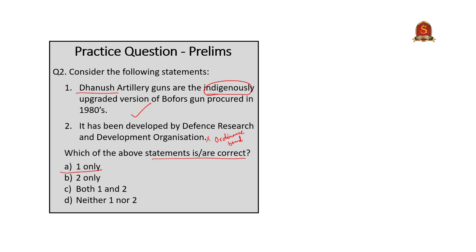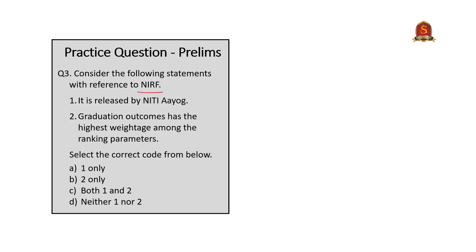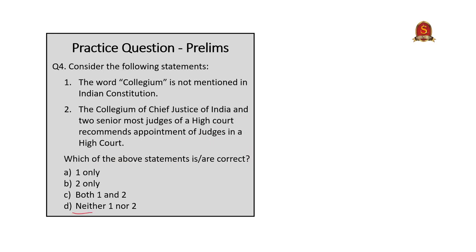The third question is about NIRF, asking for correct statements. Statement 1 — it is released by NITI Aayog — is wrong, because it is released by the Ministry of Human Resources and Development. Statement 2 — graduation outcomes has the highest weightage among ranking parameters — is also wrong, as teaching, learning and resources has the highest weightage at 30%. The correct answer is D: neither 1 nor 2.